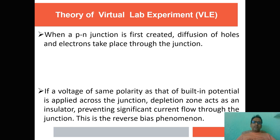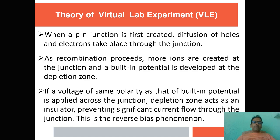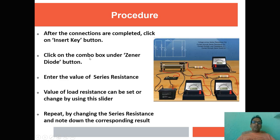When a p-n junction diode is first created, diffusion of holes and electrons takes place through the junction as a recombination process. More ions are created at the junction and a built-in potential is developed at the depletion zone. If a voltage of the same polarity as the built-in potential is applied across the junction, the depletion zone acts as an insulator, preventing significant current flow — this is the reverse bias phenomenon.